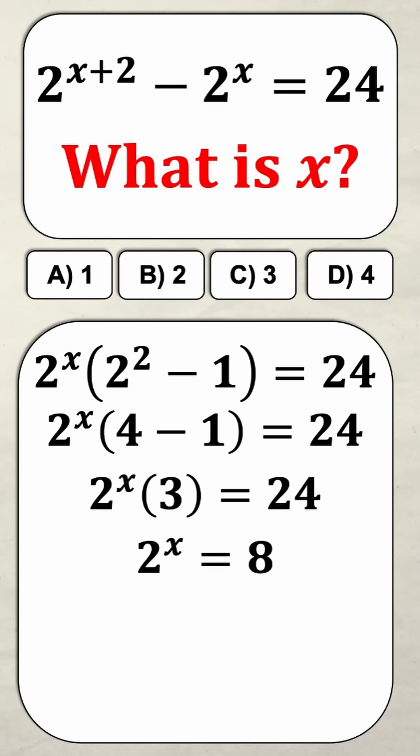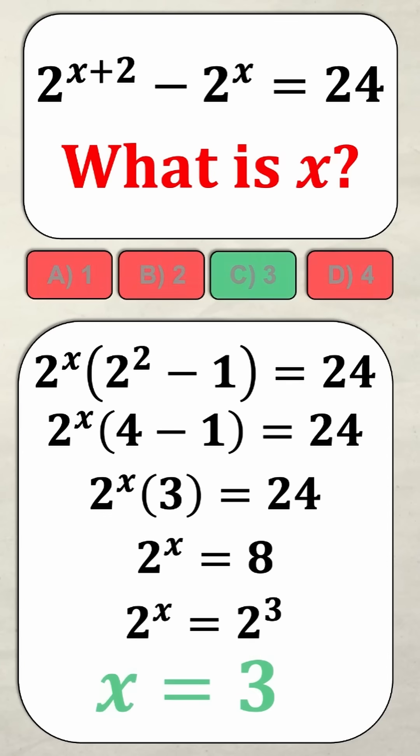Now 8 as a base 2 is just 2 to the power of 3 so this means 2 to the power of x is equal to 2 to the power of 3 and as you can probably see that means that x is equal to 3. Did you get this one right? Let me know in the comments.